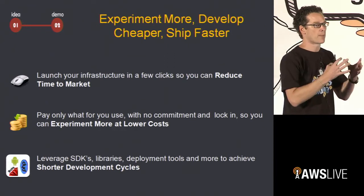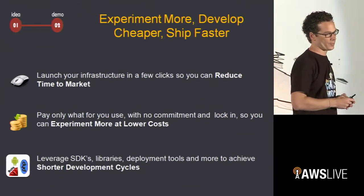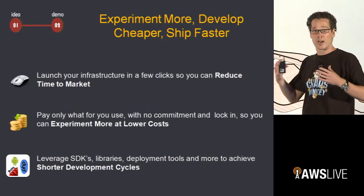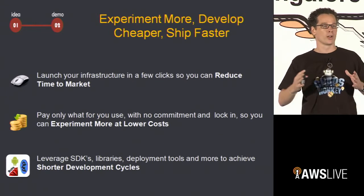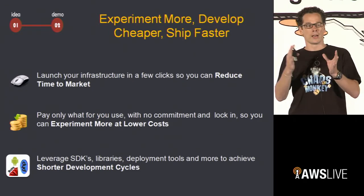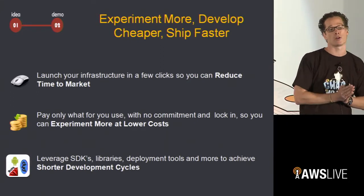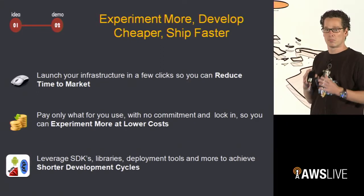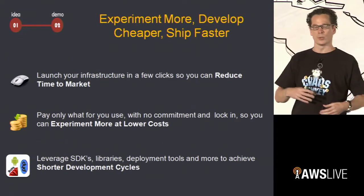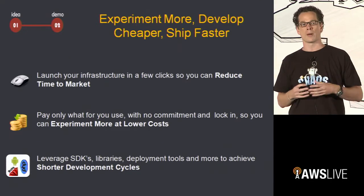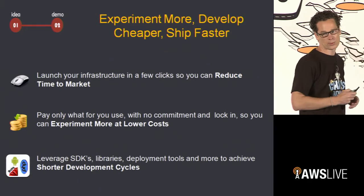When you get from idea to your demo or minimum viable product, it's all about experimenting more, developing cheaper, and shipping faster. The fact that you don't need to spend months on capacity planning, configuring hardware, doing logistics and staging — and can launch in minutes — is very powerful when you want to get to market quicker. You pay as you use, experimentation is easy, and there are SDKs, deployment tools, and great scripts and repositories on Git that allow shorter development cycles.